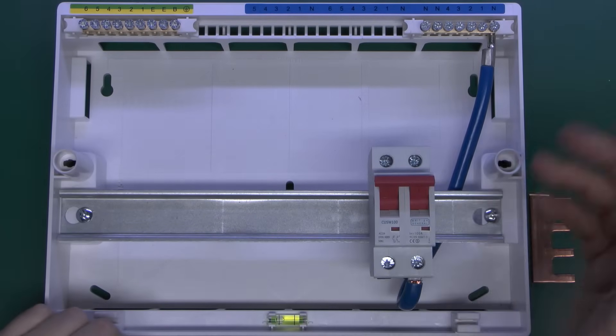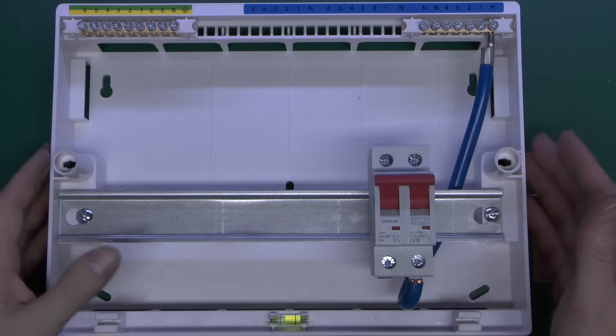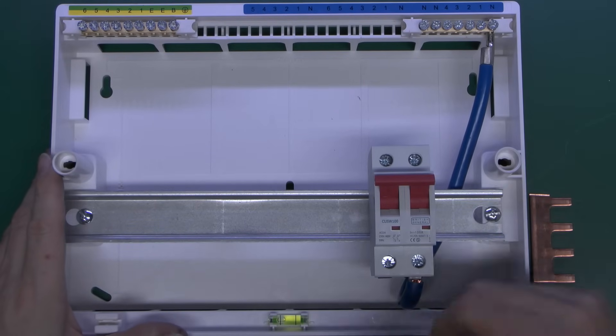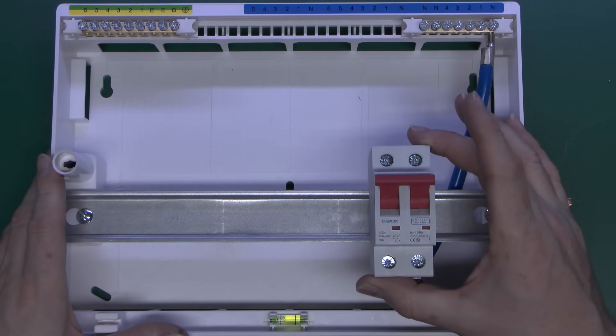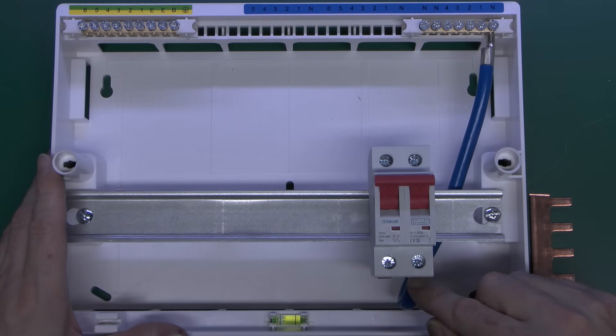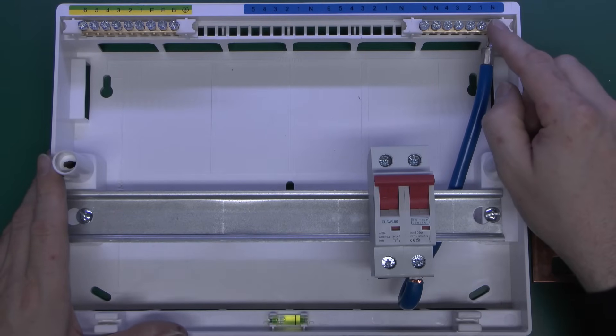So having got rid of all that junk in there we're now left with what is basically a main switch consumer unit. So it's an empty box and all we've got inside is the main switch and a single wire from the neutral here to the neutral bar up the top there.